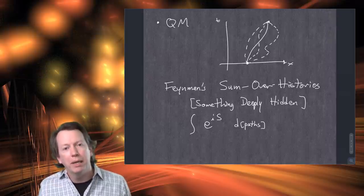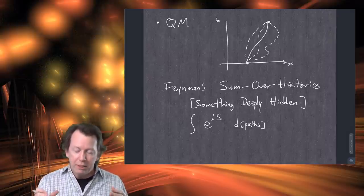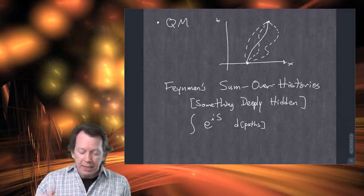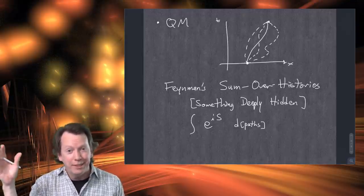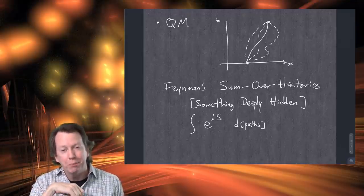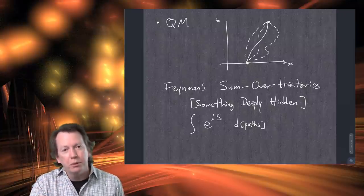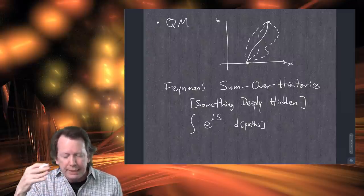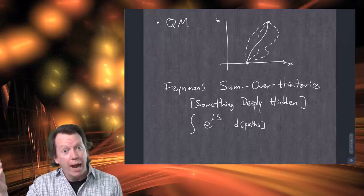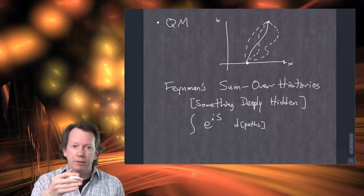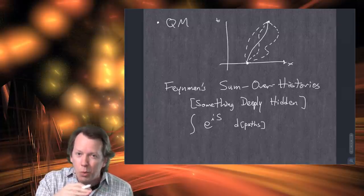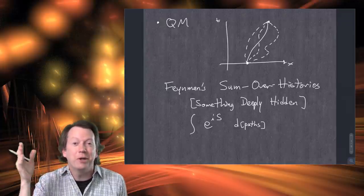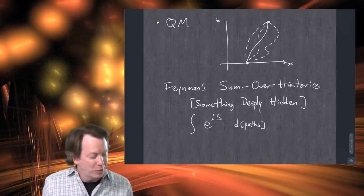The relationship of Feynman's sum over histories to ordinary quantum mechanics using the Schrödinger equation is exactly the same as the relationship between the principle of least action and the Newtonian way of doing classical mechanics — namely, they make exactly the same predictions. There is no empirical difference; they are two different formalisms giving the same physical theory. Feynman was inspired by Dirac, who was the first to use the action formalism in quantum mechanics, but didn't quite go all the way. Feynman asked: can we think about this as summing over all paths? And then he invented this formalism.